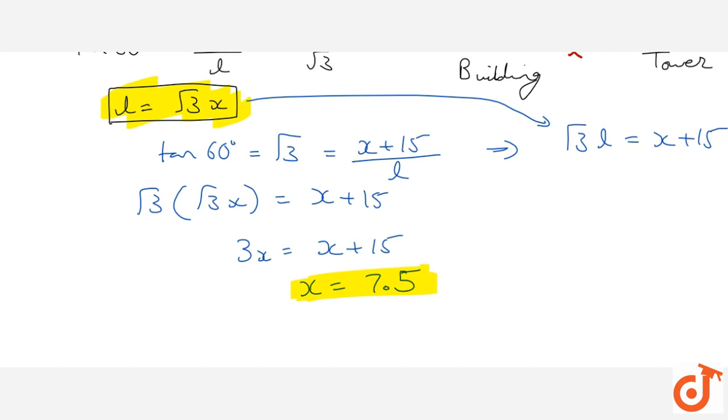What was the height of tower? Height of tower was equal to x plus 15, so this will be 7.5 plus 15 and this value will be 22.5 meters.